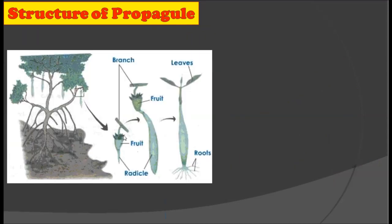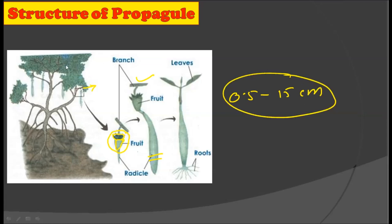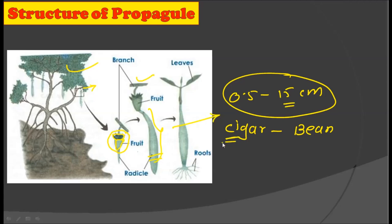Consider the structure of this propagule. It is developed from the fruit — mangroves generally have this cup-shaped fruit. From this cup-shaped fruit, which is present on the parent plant, the propagule starts to develop. You can see here the branches and the radicle. These propagules are generally 0.5 to 15 cm in length, which they achieve while on their parent plant. In some cases they are cigar-shaped, and sometimes they are bean-shaped as well, depending on which mangrove species we are talking about.